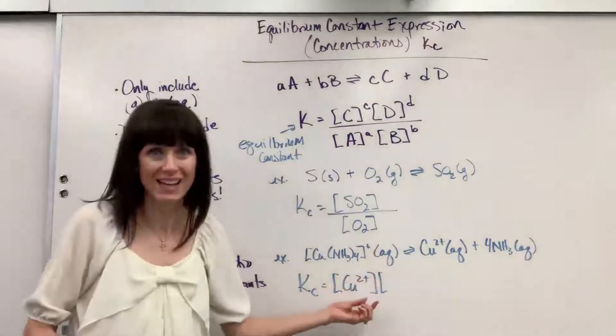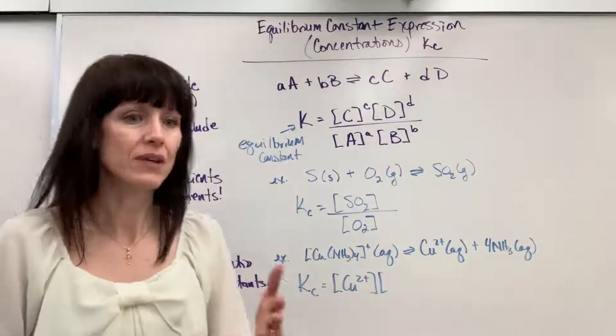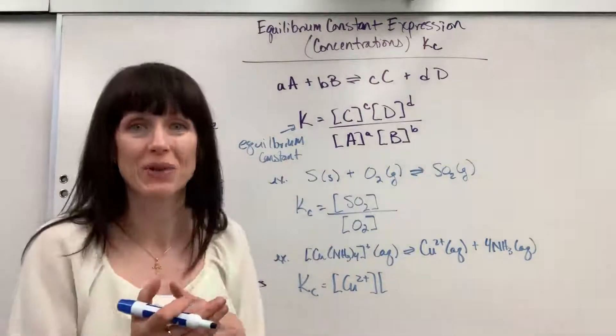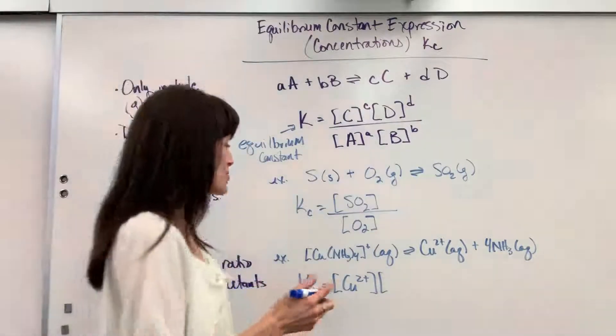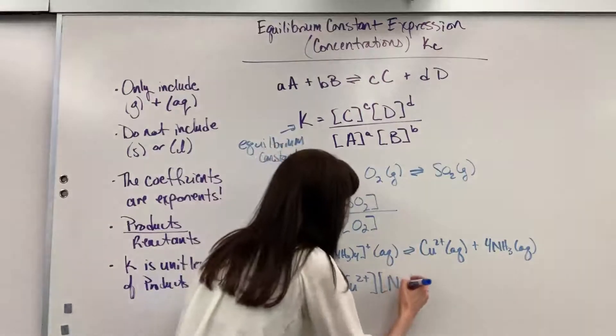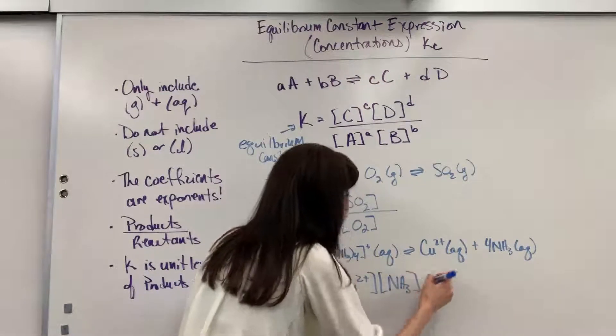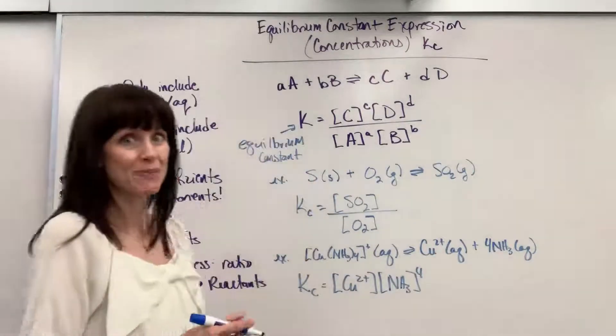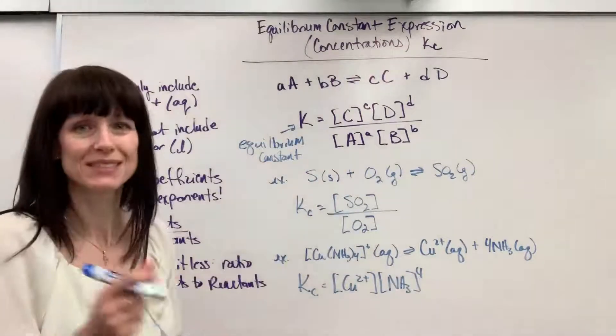Now, this is a big mistake. Remember, this is multiplied. It's not added. Every year, I'll have a couple students that will put a little plus sign right there. No, it's multiplied. You multiply these concentrations. This is going to be ammonia because it's aqueous. And notice, this exponent, excuse me, its coefficient is 4. So, the exponent is 4. Nice. That's slick. Easy.